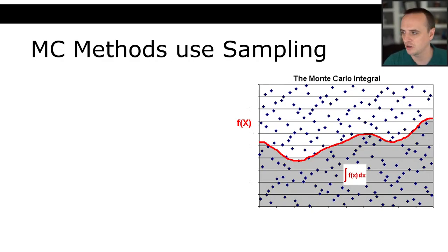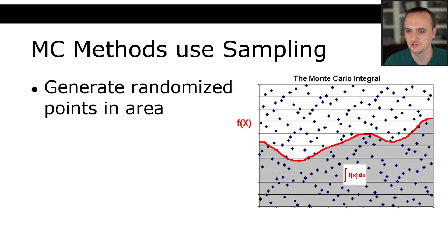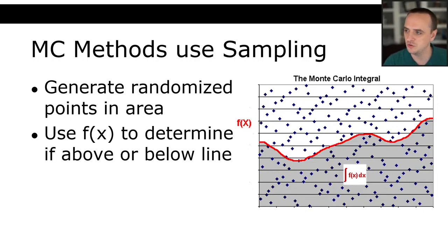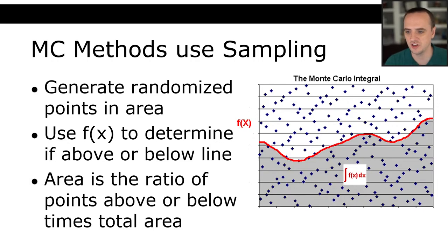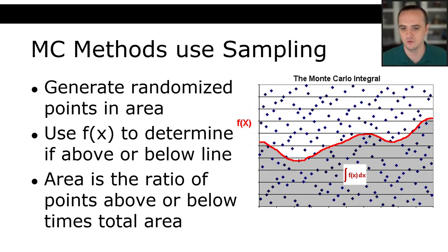We could do another example of a Monte Carlo sampling method to calculate the area of an integral. We have some function and we want to calculate the area under the graph in a range. We generate randomized points in an area, use f(x) for the x value to see whether a point lies above or below the function, take the ratio of points below versus above, and since we've taken a rectangular area, we can find an approximate area of the integral. Monte Carlo methods are used for way more than just reinforcement learning.